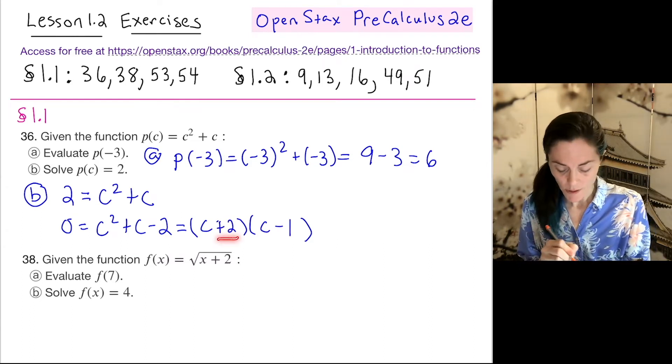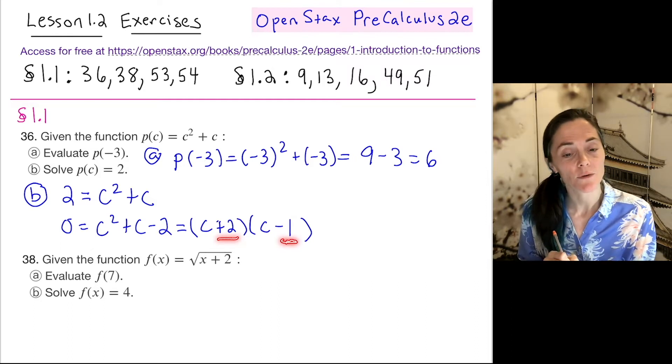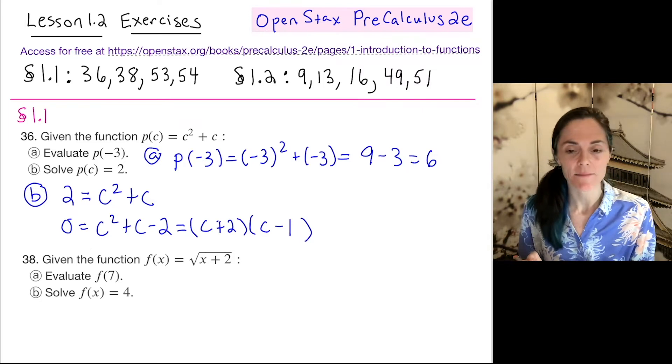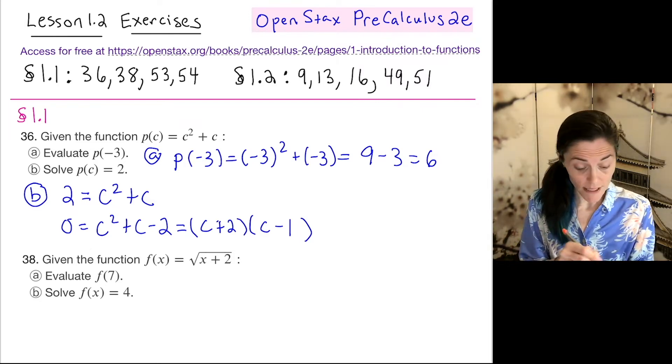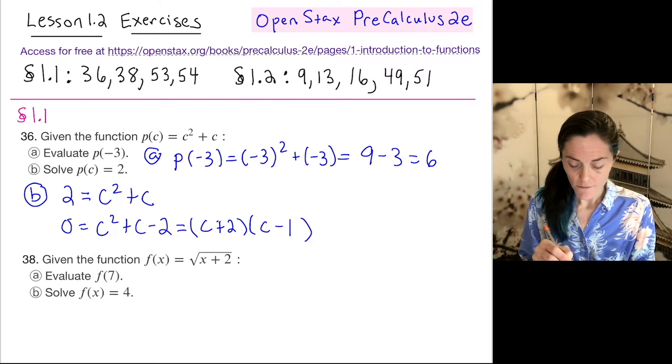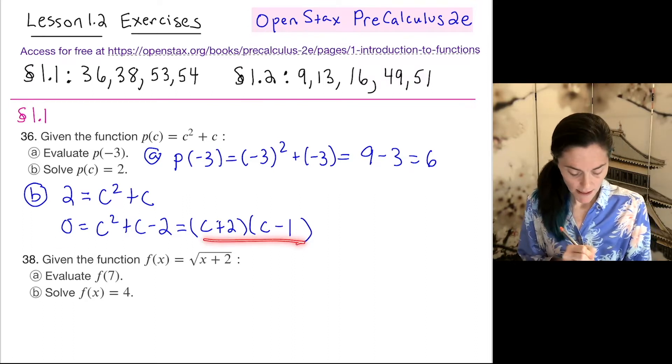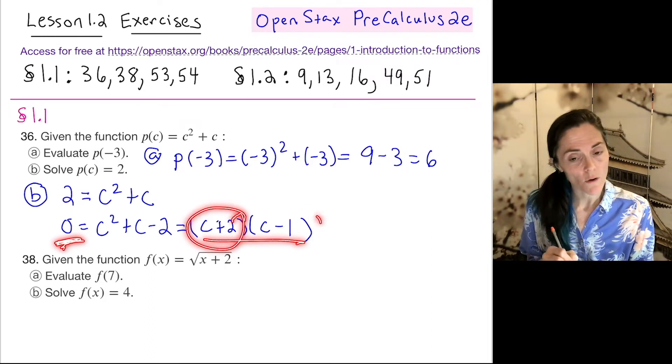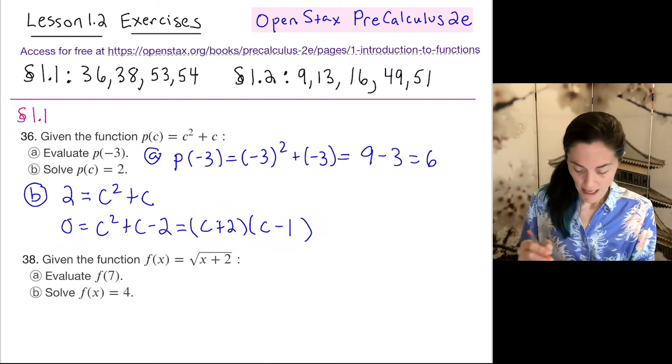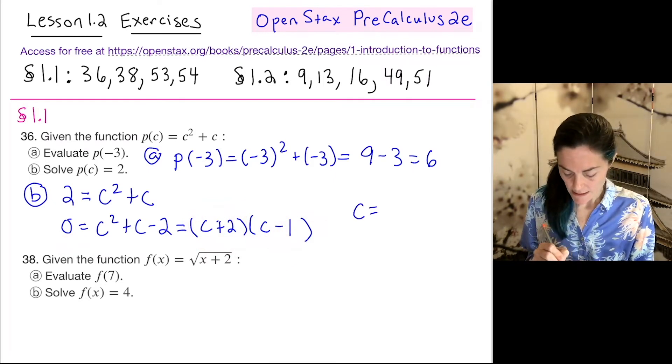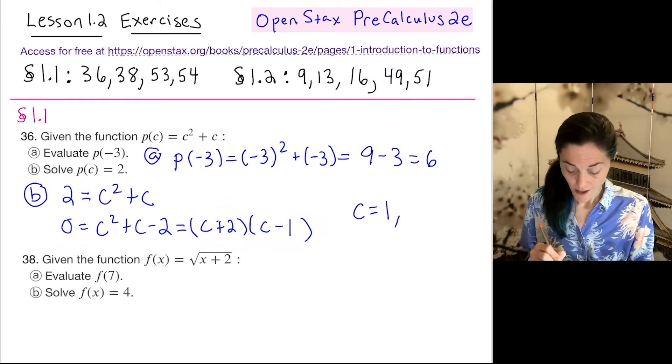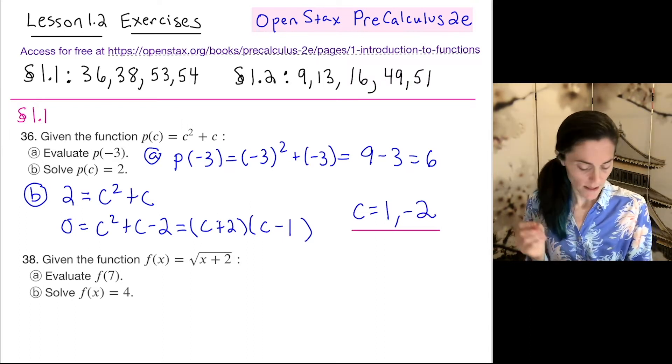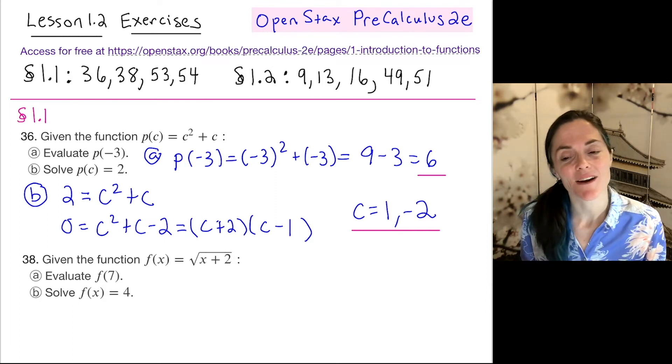Now let's check. Multiply, we get negative 2. Add, we get positive 1. So we have factored correctly. But now you see we can just solve for c. We have this equal to 0 and that means either c plus 2 is 0 or c minus 1 is 0. And we get c is 1 and we also get c is negative 2. So here is my answer in letter b and my answer in letter a.